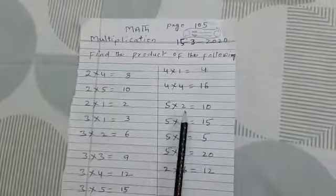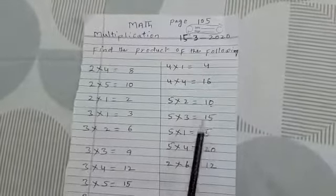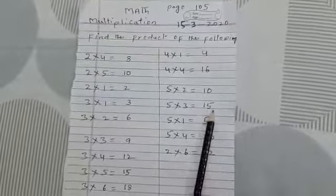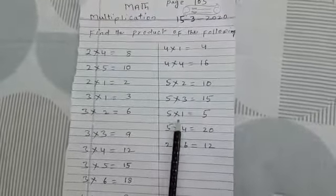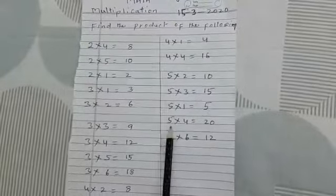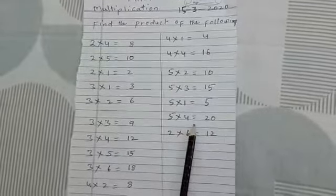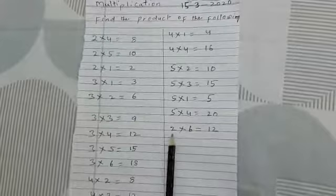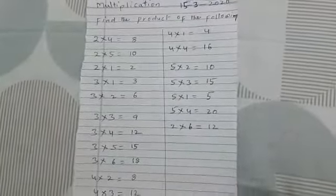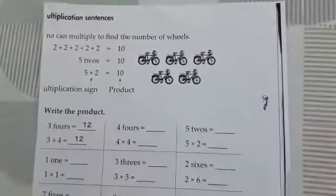5 multiplied by 2 is equal to 10. 5 multiplied by 3 is equal to 15. 5 multiplied by 1 is equal to 5. 5 multiplied by 4 is equal to 20. 2 multiplied by 6 is equal to 12.